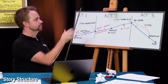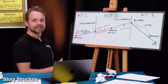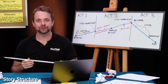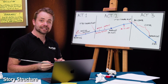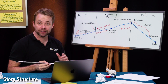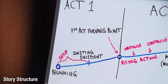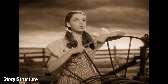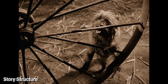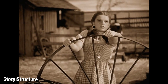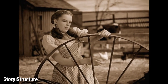Act one is where you introduce your characters and launch them into their journey. This act can be broken down further into the set-up, where you introduce your characters and show the ordinary world in which they live. During this time, you will show your characters' flaws and their potential for growth, and also set the tone of your film.